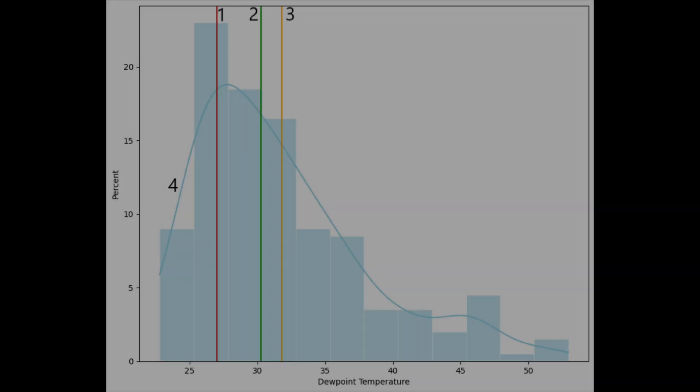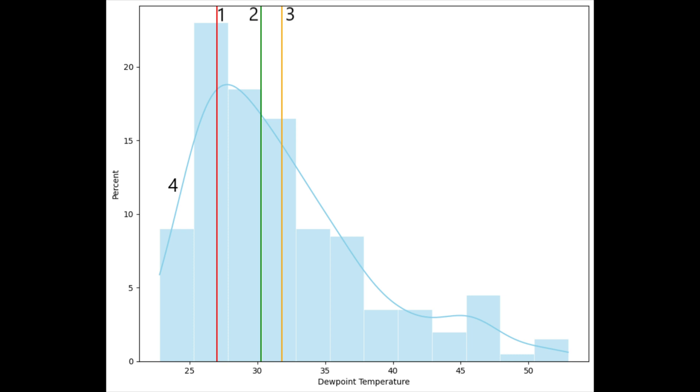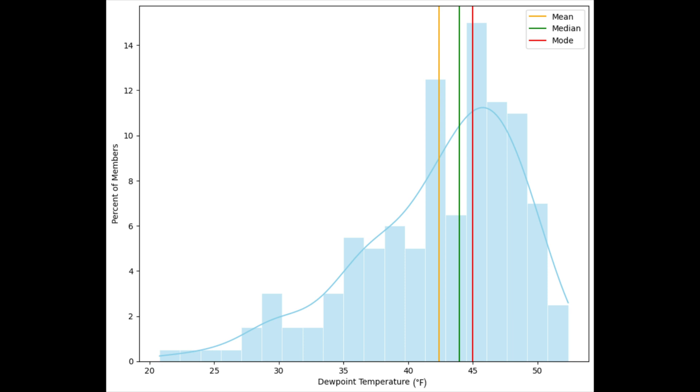That's important because when the distribution doesn't look that way and drops off slower on one side than the other, resulting in a longer tail on one side, we get what is called a right or left skewed Gaussian distribution.